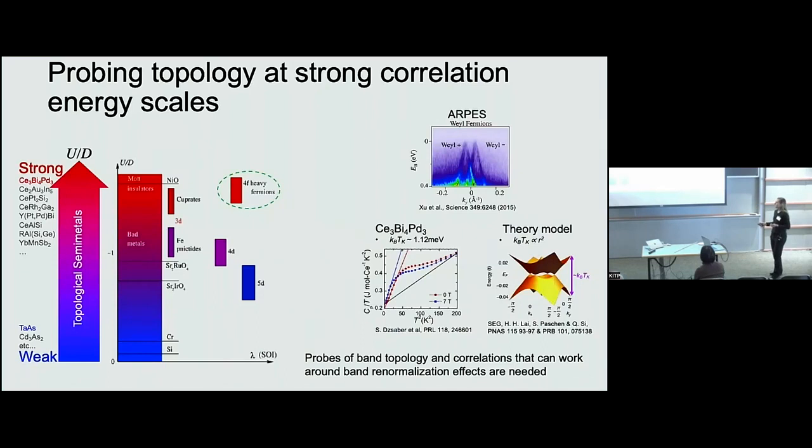We can identify some topological semi metals in the weak correlation regimes such as tantalum arsenide which is a Weyl metal and cadmium arsenide which is a Dirac semi metal. And in the strongly correlated regime, there have been many candidates proposed and realized with experimental evidence that point to topological semi metal states there.